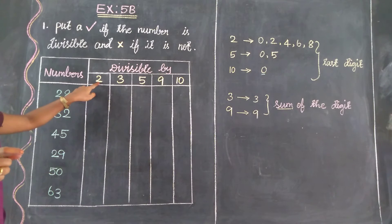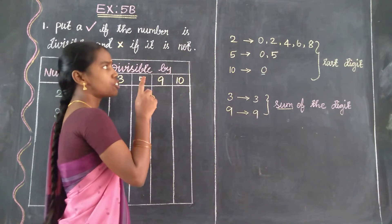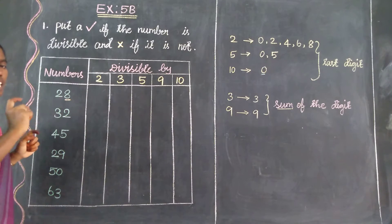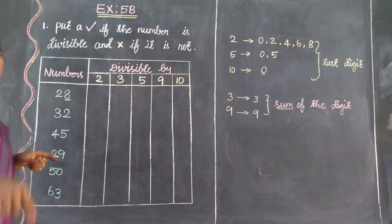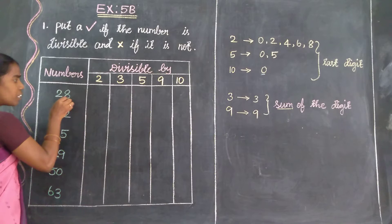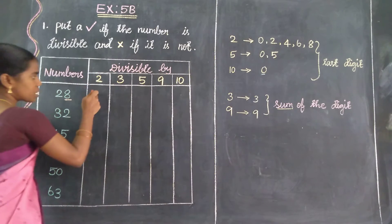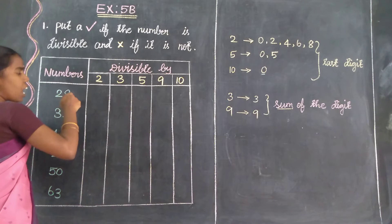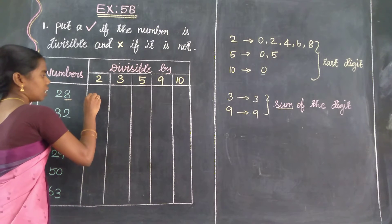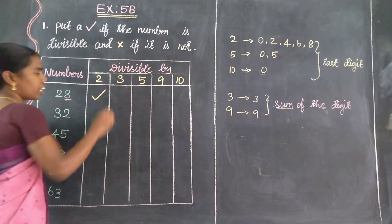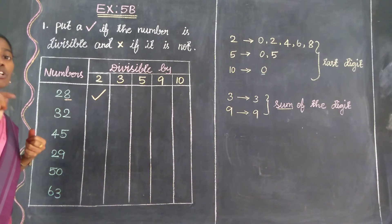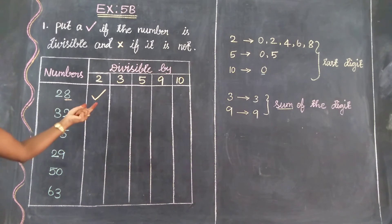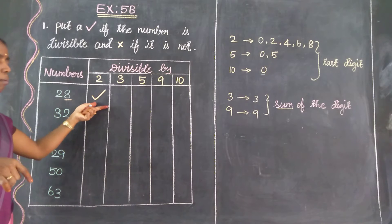First, find out divisibility by 2. The rule for 2 is: last digit must be 0, 2, 4, 6, or 8. The number is 28 — last digit is 8, so it is divisible by 2. The whole number is always divisible by 2. How many times? 14 times in the 2 times table equals 28. So 28 is divisible by 2.